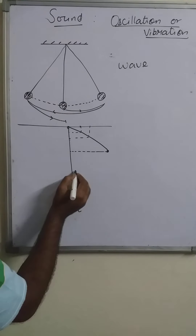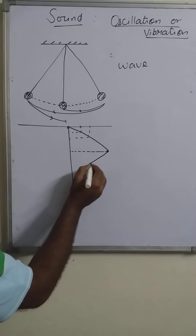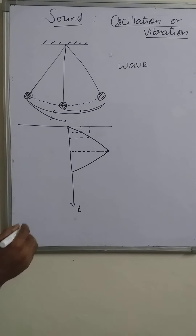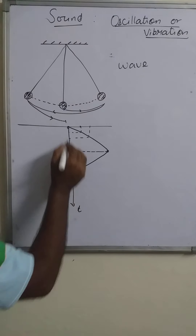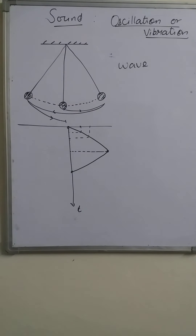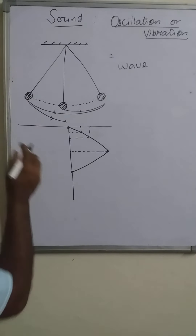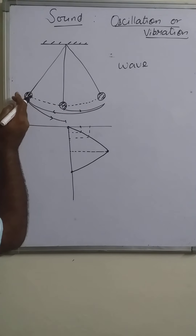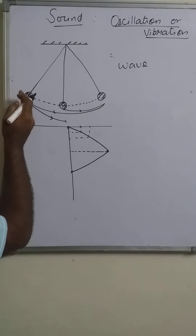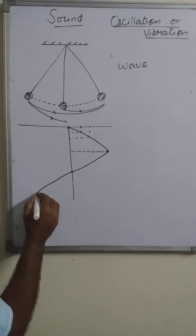The position decreases but time keeps increasing, so the graph is drawn like this. The bob has now reached its mean position again and is going to the opposite extreme. Again, the displacement increases and time also increases, so the graph continues in this way.